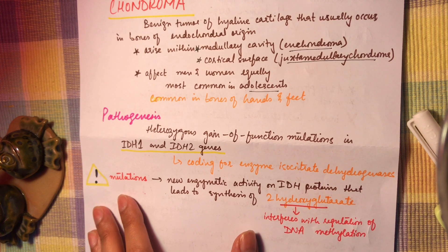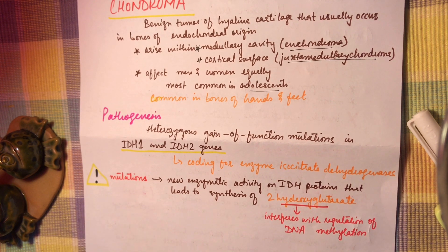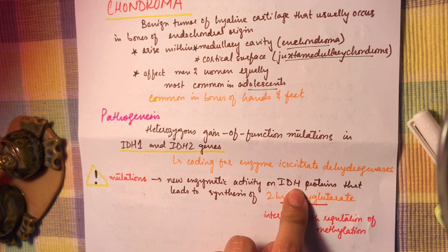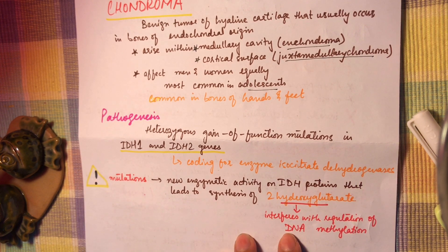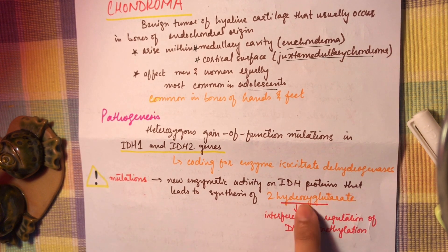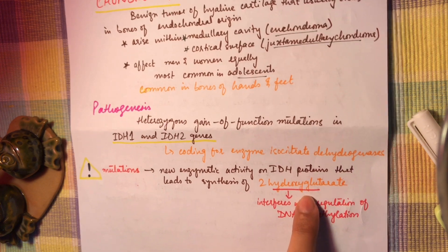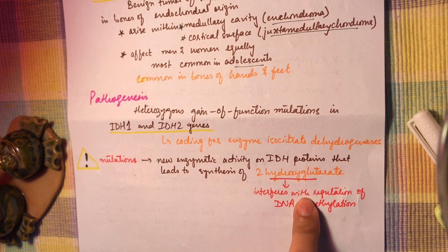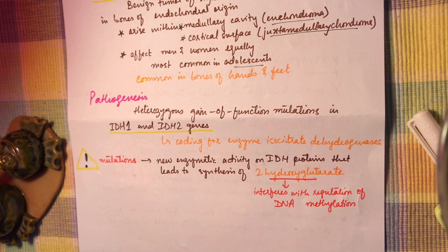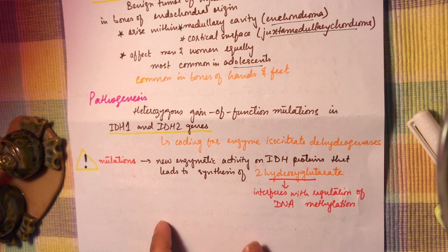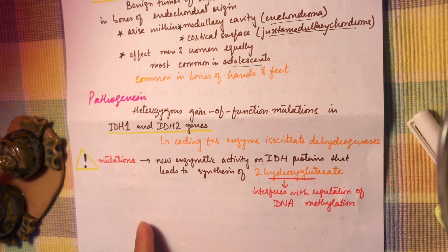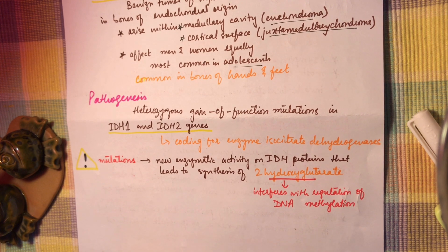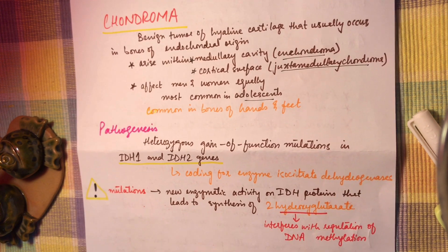The IDH1/IDH2 mutations confer a new enzymatic activity on the IDH proteins, leading to the synthesis of 2-hydroxyglutarate. This 2-hydroxyglutarate is an oncometabolite that interferes with the regulation of DNA methylation and is also implicated in other tumors such as glial tumors and acute myeloid leukemias.